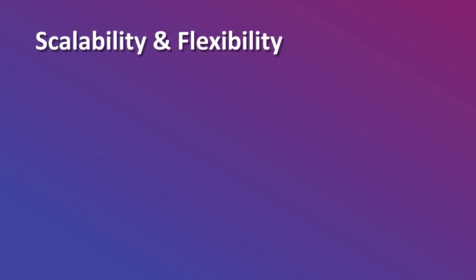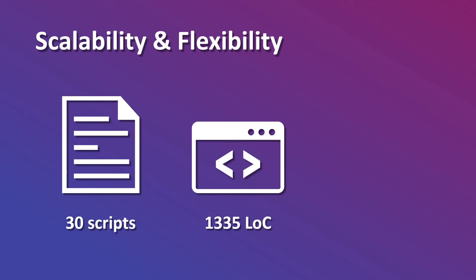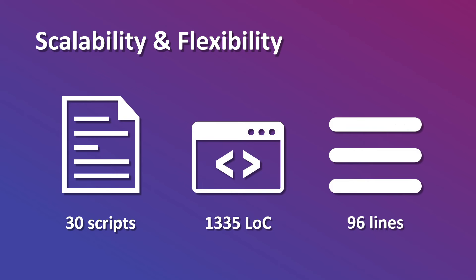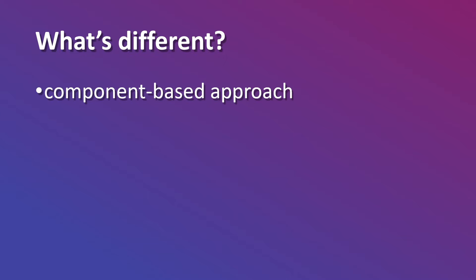What can you expect from season one in terms of scalability and flexibility? Just like with the Slay the Spire course, I tried my best to create a scalable and flexible solution. In terms of scripts, we have 30 for the first season, with a combined total of just a bit more than 1300 lines of code. The longest class is called the unit combiner and it consists of 96 lines of code, with white spaces included. We'll use a component-based approach to show you a different way of handling things in Godot by using granular components which can be reused in a lot of different contexts.